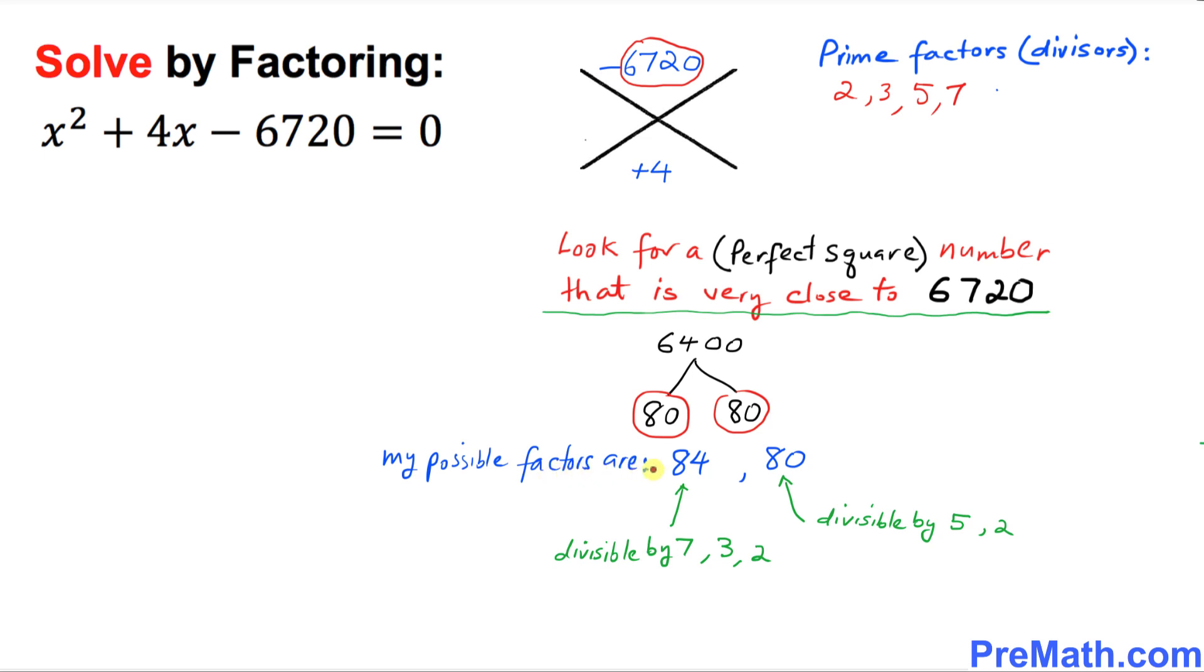Thus, our possible factors turn out to be 84 and 80. You can see that both numbers are divisible by our prime factors. 84 is divisible by 7, 3, and 2, and 80 is divisible by 5 and 2.